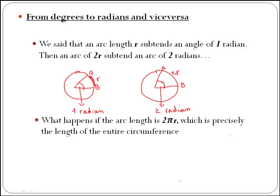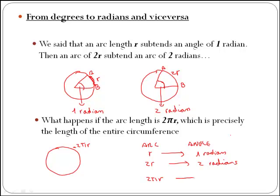What happens if the arc length is 2πr, which is precisely the length of the entire circumference? Just remember, the length of the circumference is precisely 2πr. So we said if the arc is of length r, then the angle is one radian. If the arc is of length 2r, then the angle is two radians. So if the length of the arc is 2πr, then the angle will be precisely 2π radians.